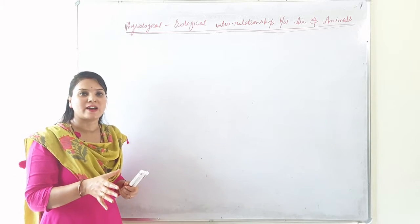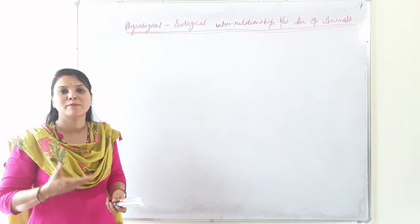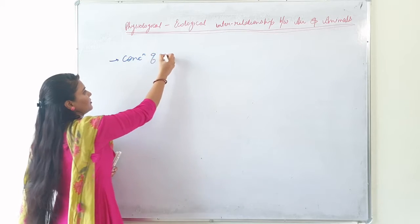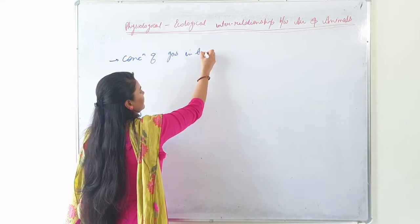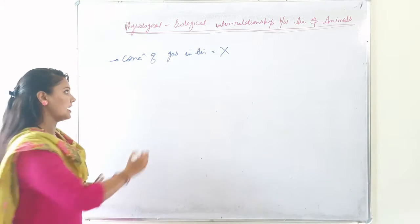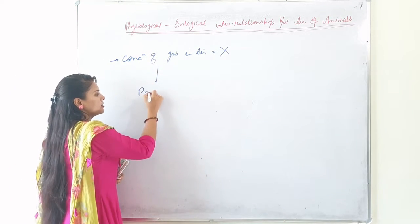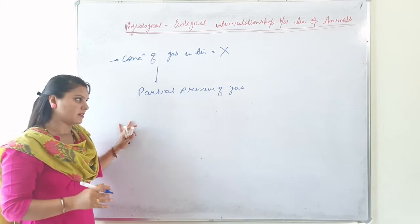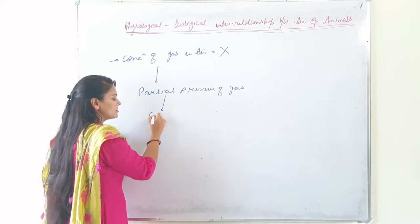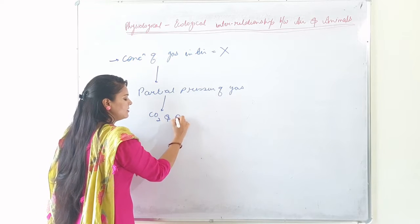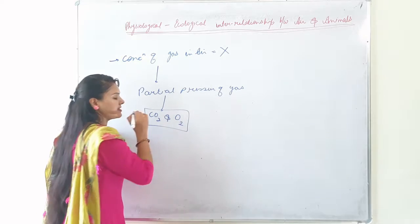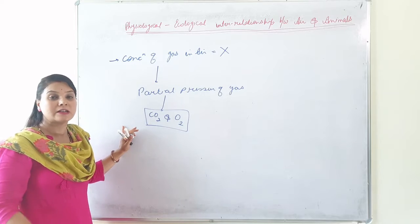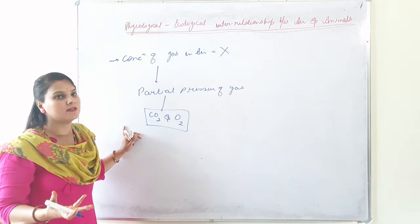But the important factor is partial pressure of a particular gas. The partial pressure of gas is an important factor, basically the partial pressure of CO2 and O2, because these two gases present in atmosphere are directly used by all living organisms present on Earth.